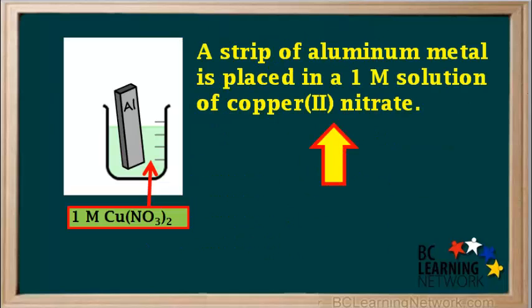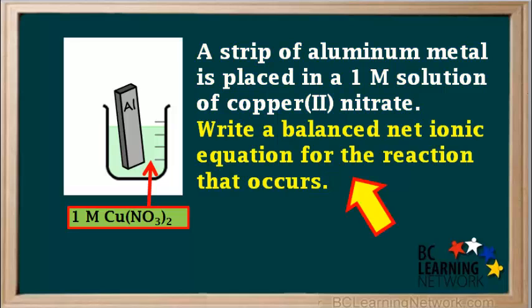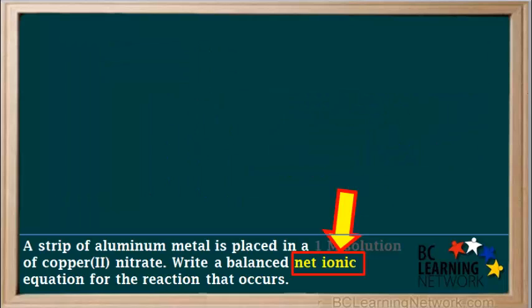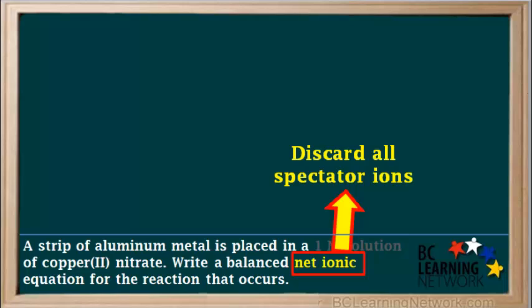Let's start with an example. A strip of aluminum metal is placed in a 1 molar solution of copper 2 nitrate. We're asked to write a balanced net ionic equation for the reaction that occurs. Because we're asked for the net ionic equation, we must discard all spectator ions.